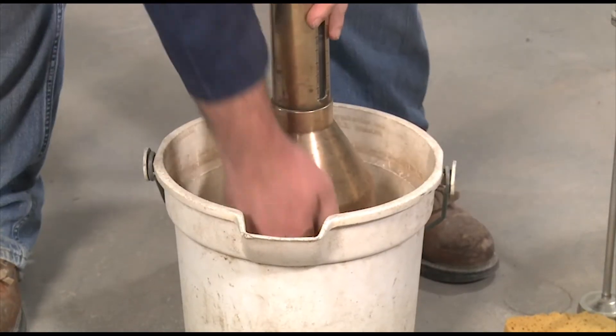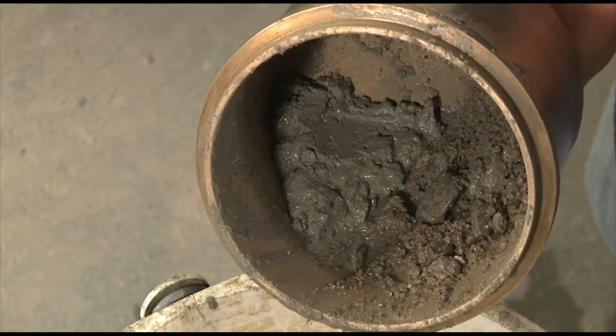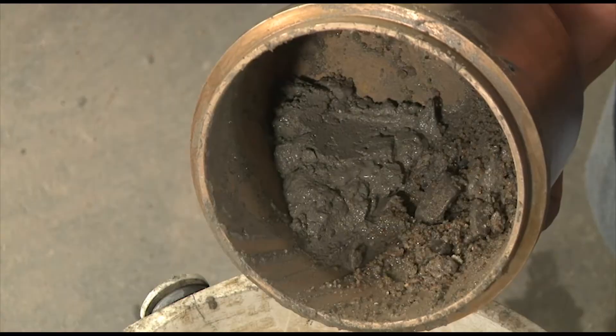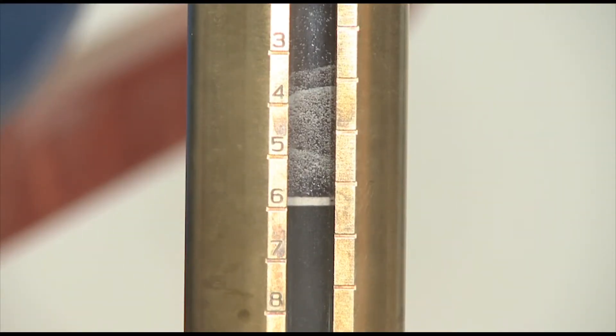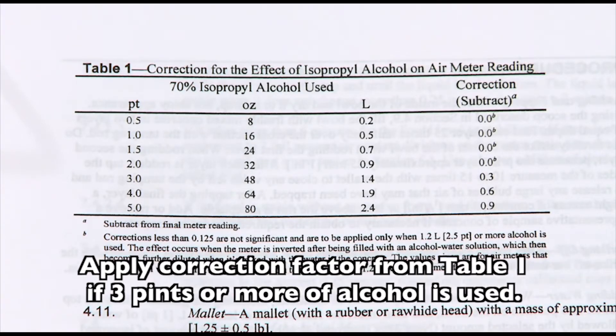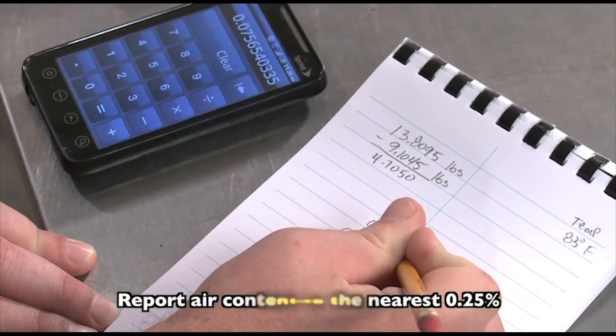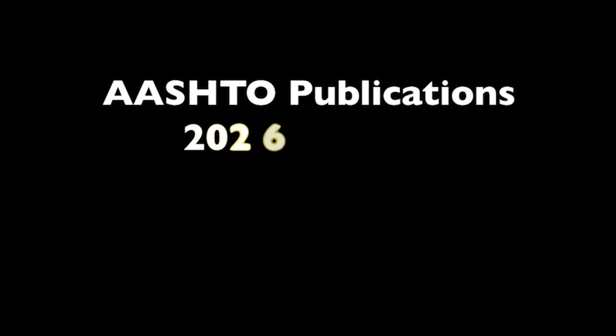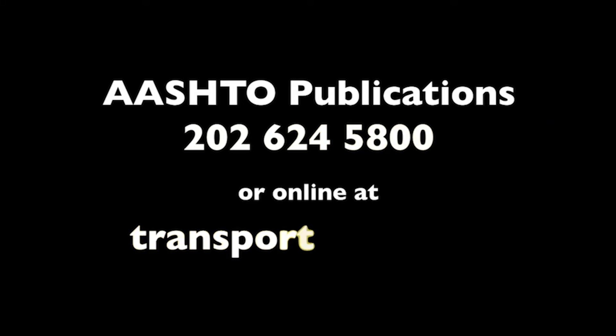When the test is complete, disassemble the meter and check the bowl. If it appears that any concrete remains compacted in the base, the test is invalid. When reading the meter, be sure to record the level at the bottom of the meniscus. Apply the appropriate correction factor from Table 1, if required, and report your final reading to the nearest quarter percent air content. For more details on the most recent specifications, consult the latest AASHTO publication, which may be ordered by calling 202-624-5800 or online at transportation.org.